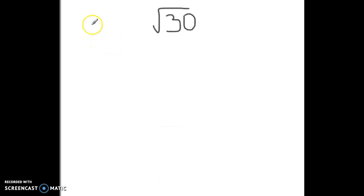The square root of 30. So the first thing I do is what perfect squares are on either side. So I'm going to do the square root of 25 and the square root of 36. So this will be 5. And this will be 6.